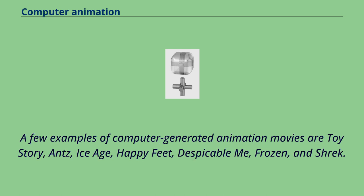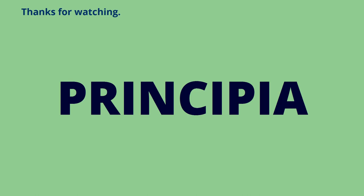A few examples of computer-generated animation movies are Toy Story, Ants, Ice Age, Happy Feet, Despicable Me, Frozen, and Shrek.